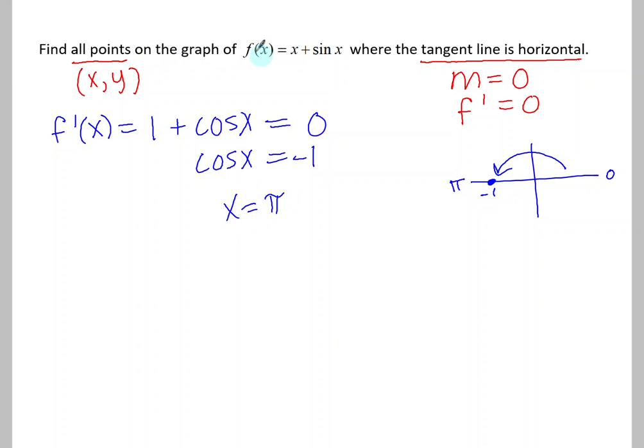However, we're not limited to a certain domain. So think about that we can get to pi or cycle all the way around one circle, which is adding 2 pi. And we can continue to do that forever.